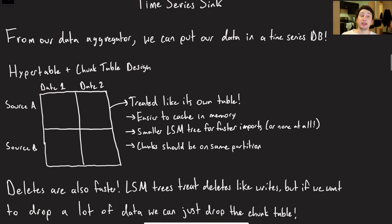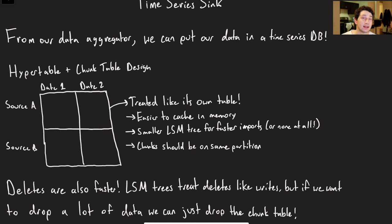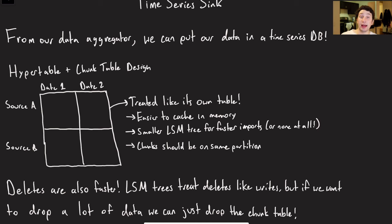Now we've aggregated a bunch of metrics indexed by time. Every five minutes I have another data point that I have to put into some sort of database — I don't want to store it in my Flink consumer forever. Generally speaking we want to keep that data in memory or maybe in a RocksDB index on Flink, but Flink is not meant to be a database. It's meant to allow you to do some computation and then put that data into a database. So here is our time series sync.